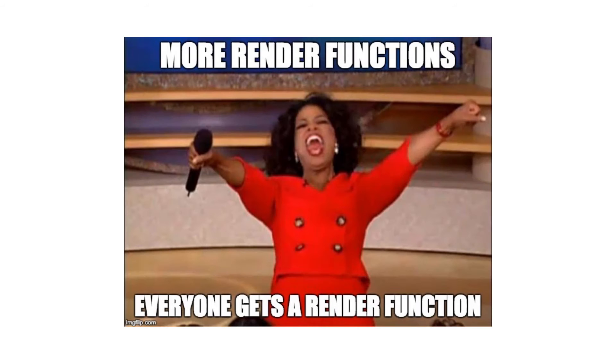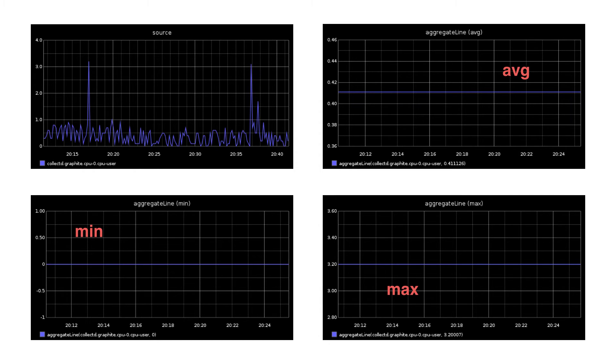Lots of new functions — this was actually supposed to be the highlight of the whole presentation. Aggregate line supports three different target functions, so you can say aggregate this line to the average, min, and max. Apply by node. Average outside percentile — it filters everything outside of a particular percentile, in this case 80.